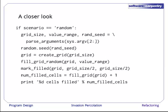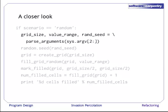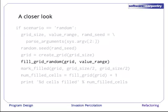Here's a closer look at what's inside that first if case. We parse arguments, seed the random number generator, create a grid, fill it with random values, mark the center cell as filled, fill the rest of the grid, and then print out how many cells were filled.